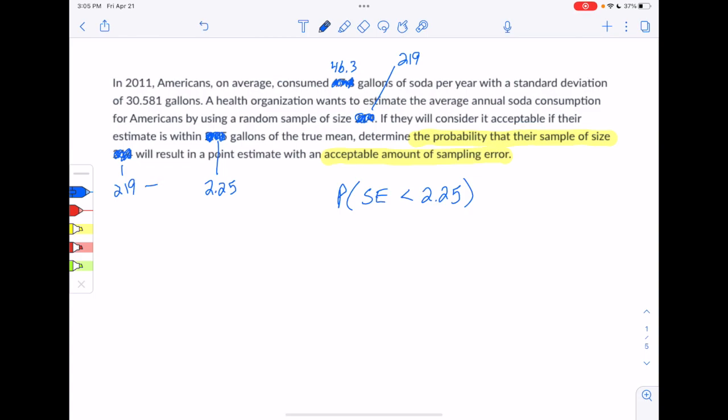So first of all, this 219 right there, that's n. And a key thing to note about that n is that it's greater than or equal to 30. We'll come back to that in a moment. They gave us the population mean as 46.3, so we'll note that. And they gave us the population standard deviation as well, 30.581.